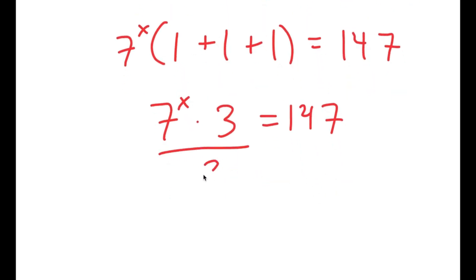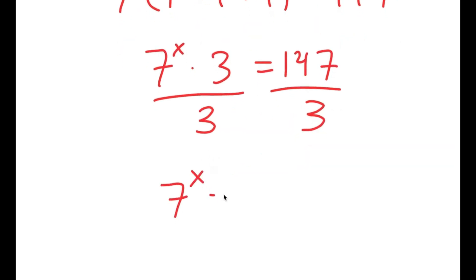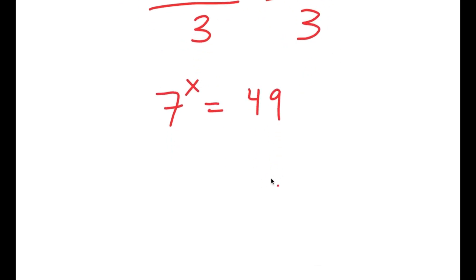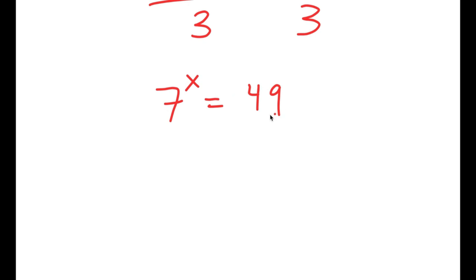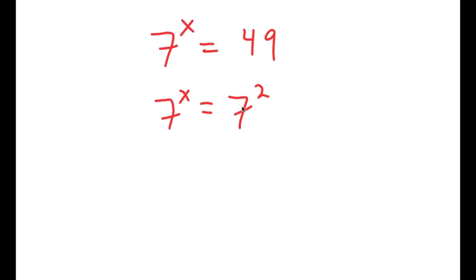From here, I'm going to divide both sides by 3, so 7 to the power of x is equal to 147 divided by 3, which equals 49. So I get 7 to the power of x is equal to 49, and 49 is equal to 7 squared. So I have 7 to the power of x equals 7 to the power of 2, meaning x is equal to 2.